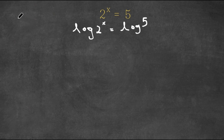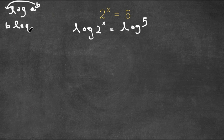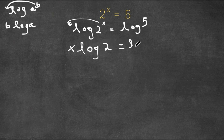Now, an important property of logarithms is that if we have something in the form log a to the power of b, we can actually move this exponent b to the front of the logarithm. So this would be b times log a. I'm going to do the same thing to log 2 to the power of x — I'm going to move the x to the front of the logarithm. So this would be equal to x times log 2, which is equal to log 5.